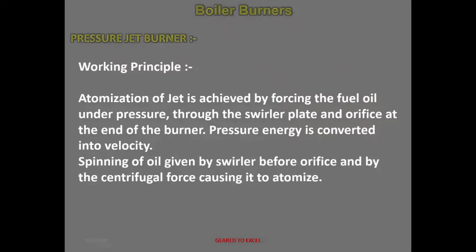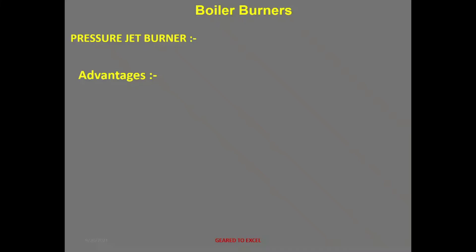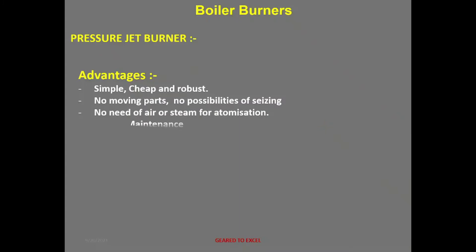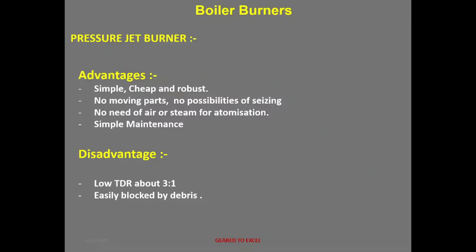Advantages of pressure jet burners: simple, cheap, and robust; no moving parts, so there is no possibility of seizing; no need for air or steam for atomization; simple to maintain. Disadvantages: low TDR — turndown ratio is very low at about 3:1; and it is easily blocked by debris, as the orifice may get clogged due to carbonization or fuel carrying debris if fuel quality is not good.